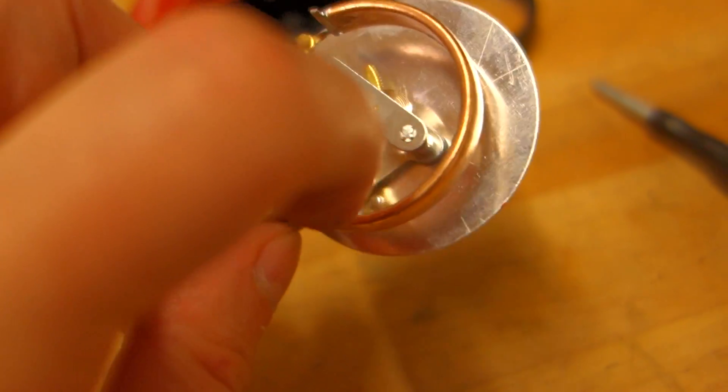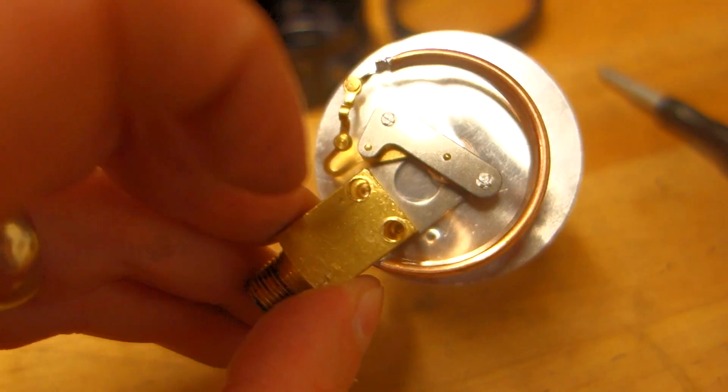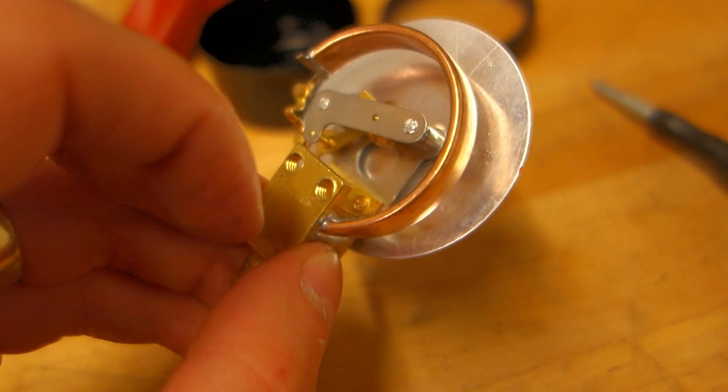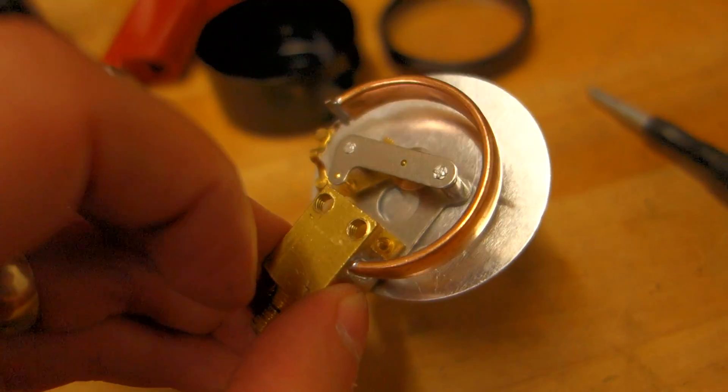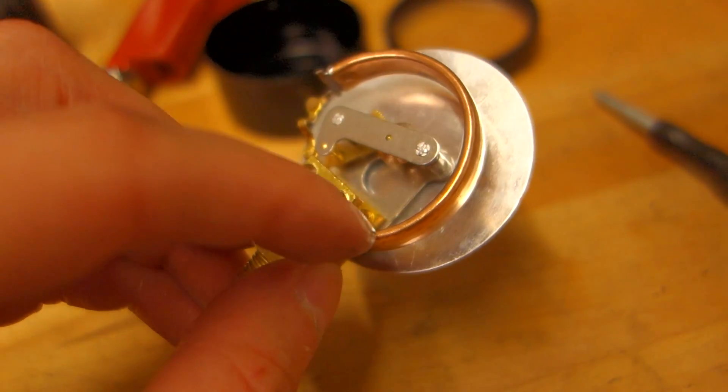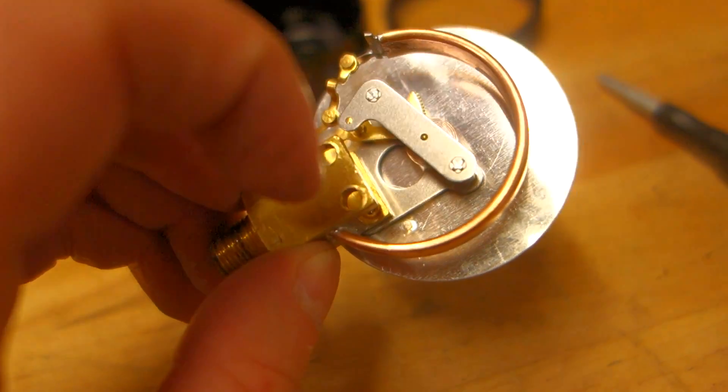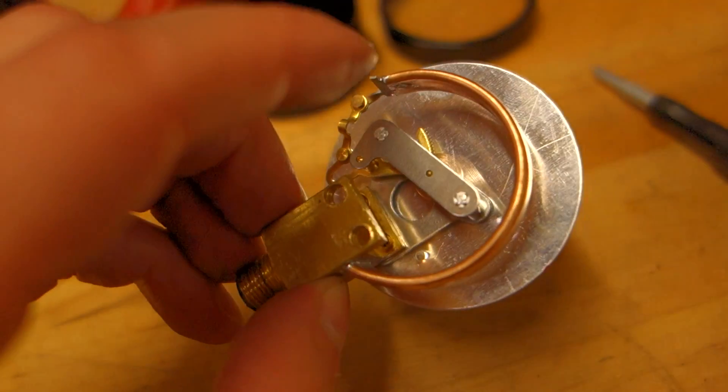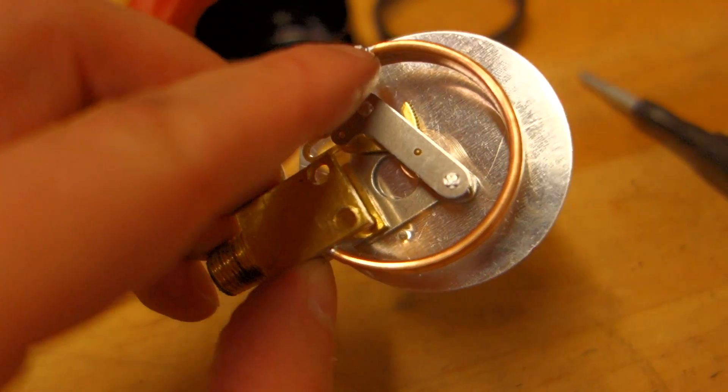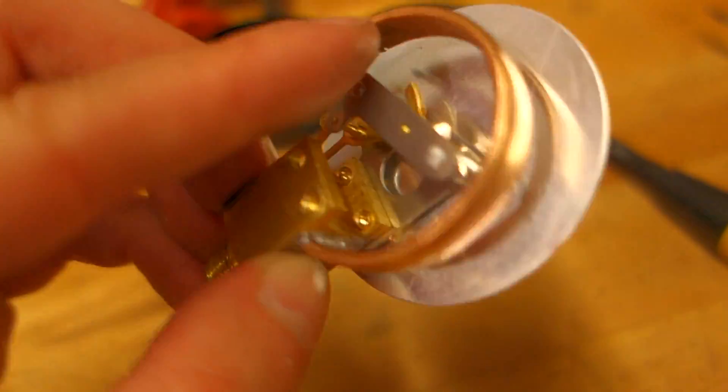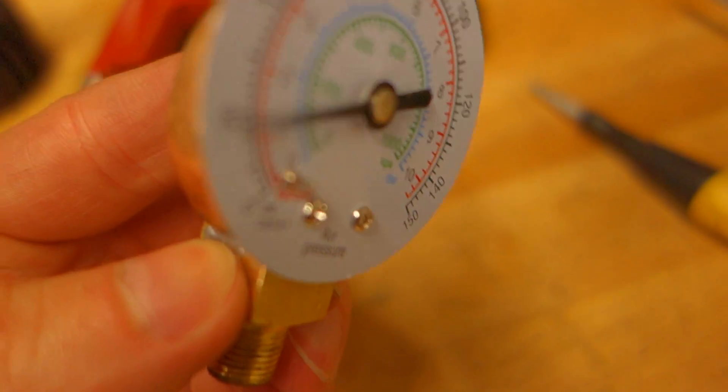So the trick here is this semicircular thing here, which is a hollow copper pipe. And as air gets in here under pressure, the pipe tries to straighten out, moving this way, which moves the arm that way, which moves the dial on the front.